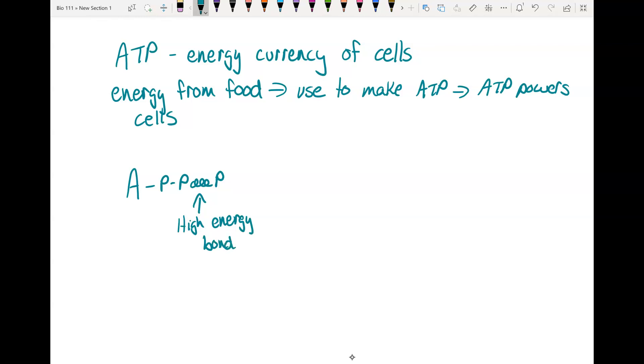The third phosphate is attached with a high energy bond. When you have work that needs to be done in your cell, you break that third phosphate off. When you break it off, that energy is released and does work in the cell.